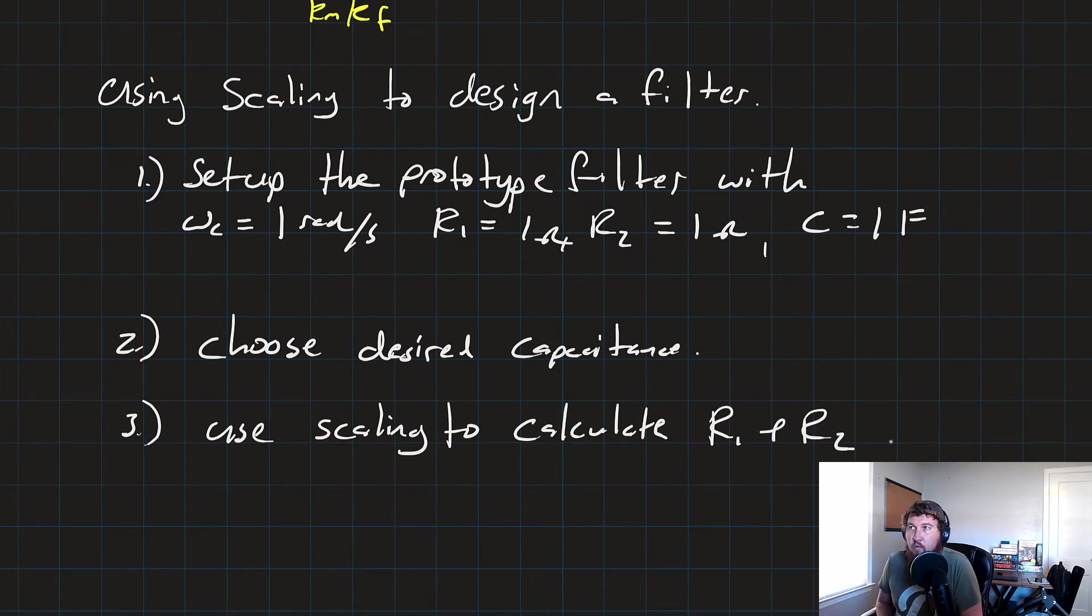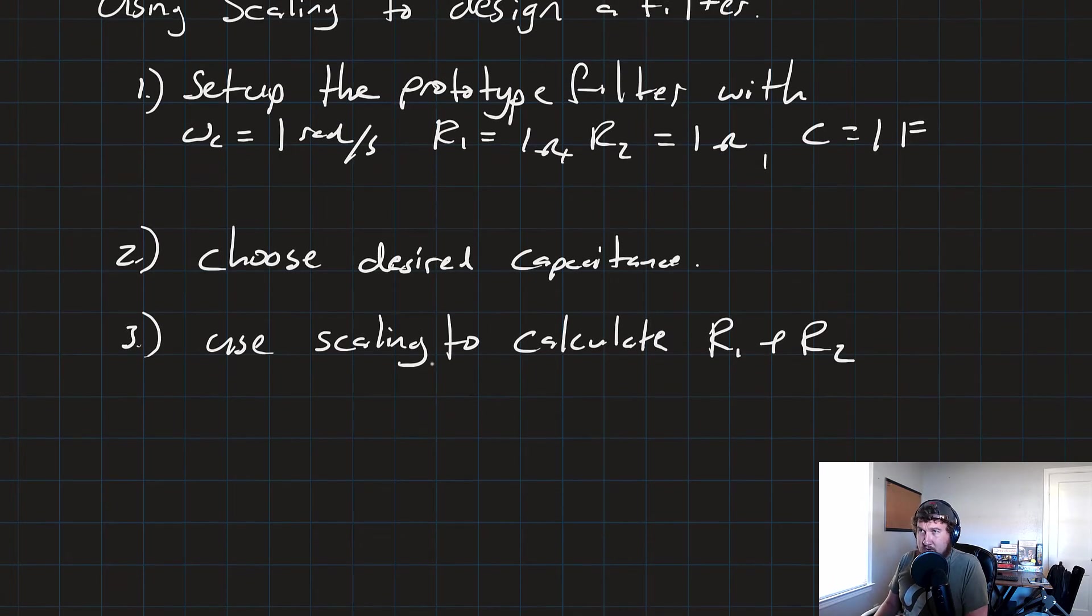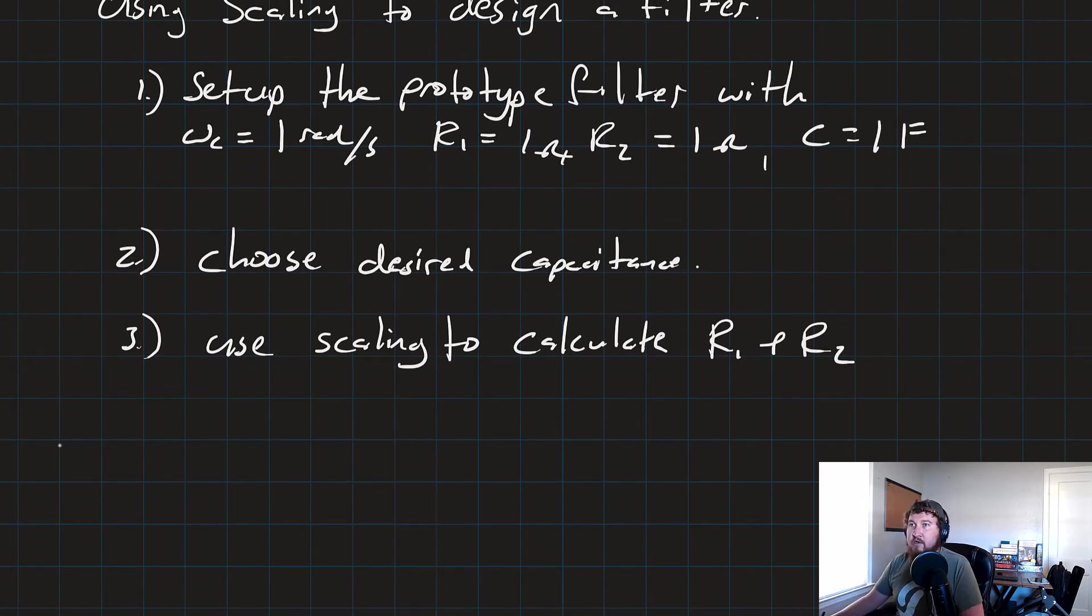So let me recap that real quick. Step one, set up the prototype filter with center frequency of 1, R1 equals 1 ohm, R2 equals 1 ohm, and capacitor equals 1 farad. This blank, clean slate filter. Choose the desired capacitance and then use that and the scaling factors to calculate our appropriate values for R1 and R2. So if that seems a little abstract, let's just go ahead and do an example.